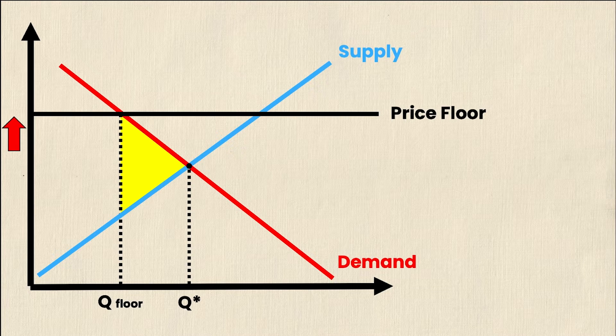Price floors lead to excess supply, also known as a surplus, unnecessarily high quality goods, and inefficient allocations to producers. In other words, oftentimes price floors end up being wasteful.